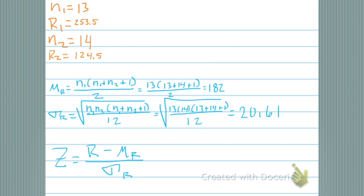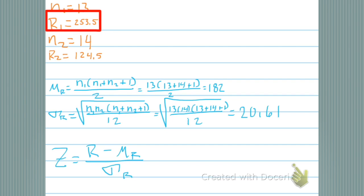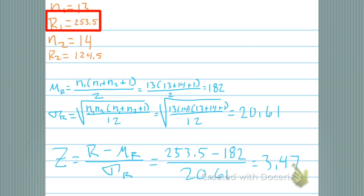Our test statistic is a z-stat. It's R — what's our R? R is our first sample's rank sum R1. We're going to let our R be R1; we could let it be the other one too, that's fine. So we have 253.5 minus 182 (the mu-R) divided by the standard deviation, and we get a z test statistic of 3.47.